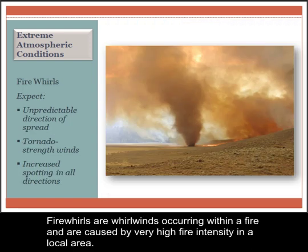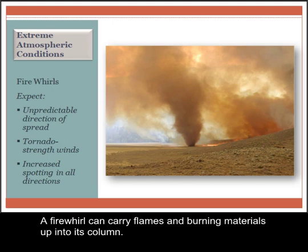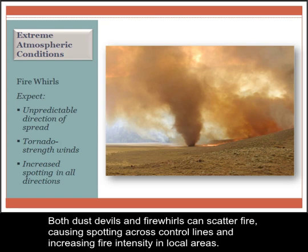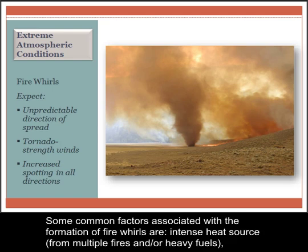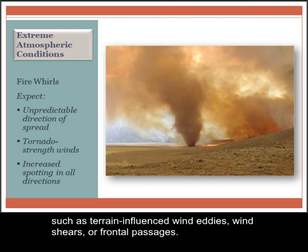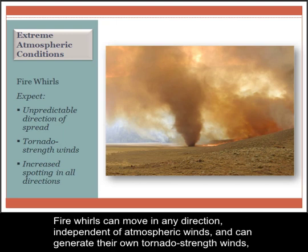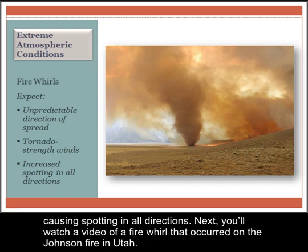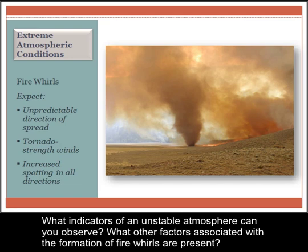Fire whirls are whirlwinds occurring within a fire and are caused by very high fire intensity in a local area. A fire whirl can carry flames and burning materials up into its column. Both dust devils and fire whirls can scatter fire, causing spotting across control lines and increasing fire intensity in local areas. Some common factors associated with the formation of fire whirls are an intense heat source from multiple fires and/or heavy fuels, an unstable atmosphere with extremely low humidity, and a source of vorticity or twisting force, such as terrain-influenced wind eddies, wind shears, or frontal passages. Fire whirls can move in any direction, independent of atmospheric winds, and can generate their own tornado-strength winds, causing spotting in all directions. Next, you'll watch a video of a fire whirl that occurred on the Johnson fire in Utah. What indicators of an unstable atmosphere can you observe? What other factors associated with the formation of fire whirls are present?